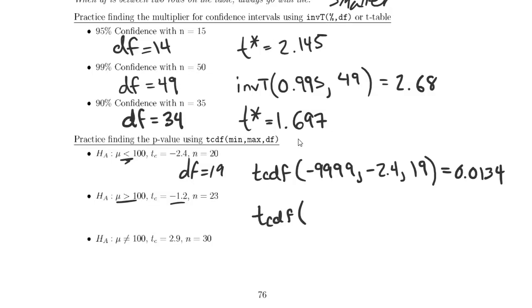So tcdf here, since mu is supposed to be greater than 100, we go from negative 1.2 to 9999, 22 which is the degrees of freedom from that 23, and we get 0.8785. That's very, very little evidence for the alternative hypothesis.